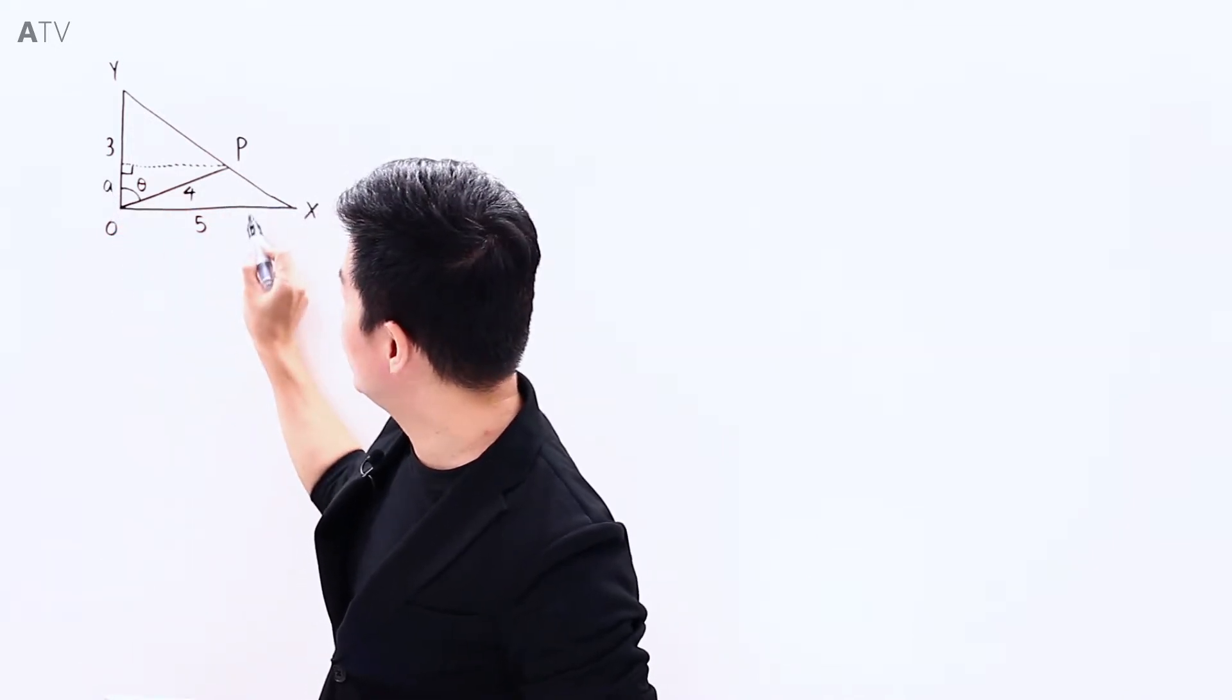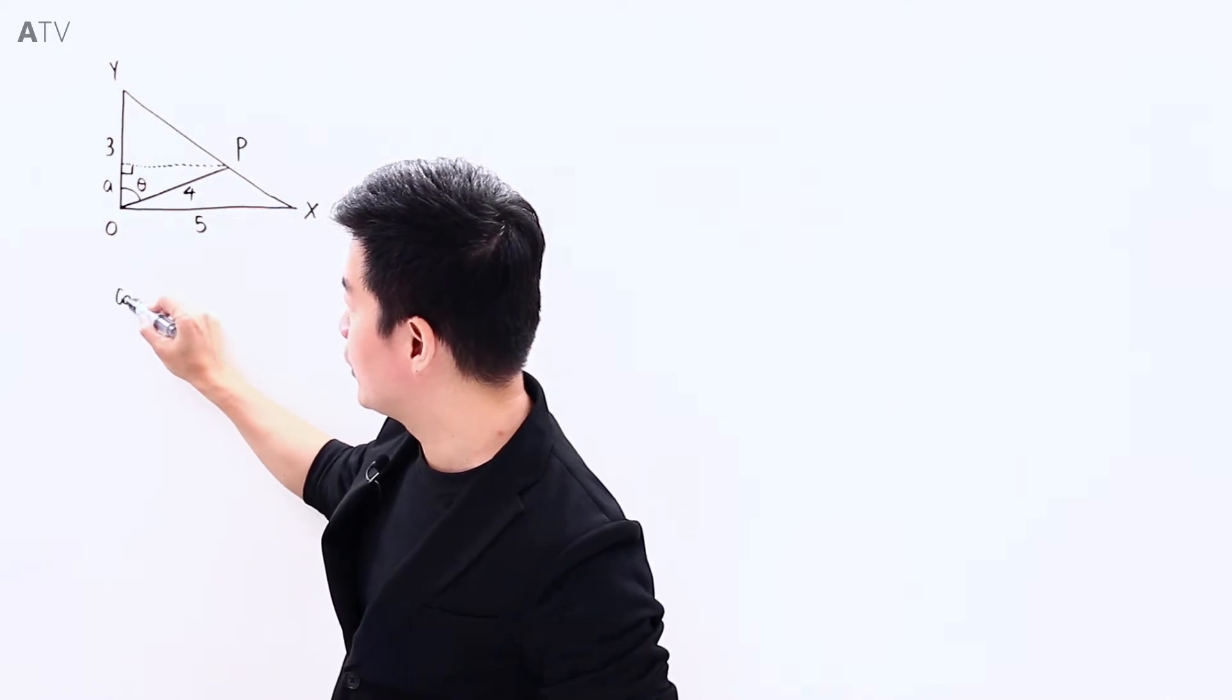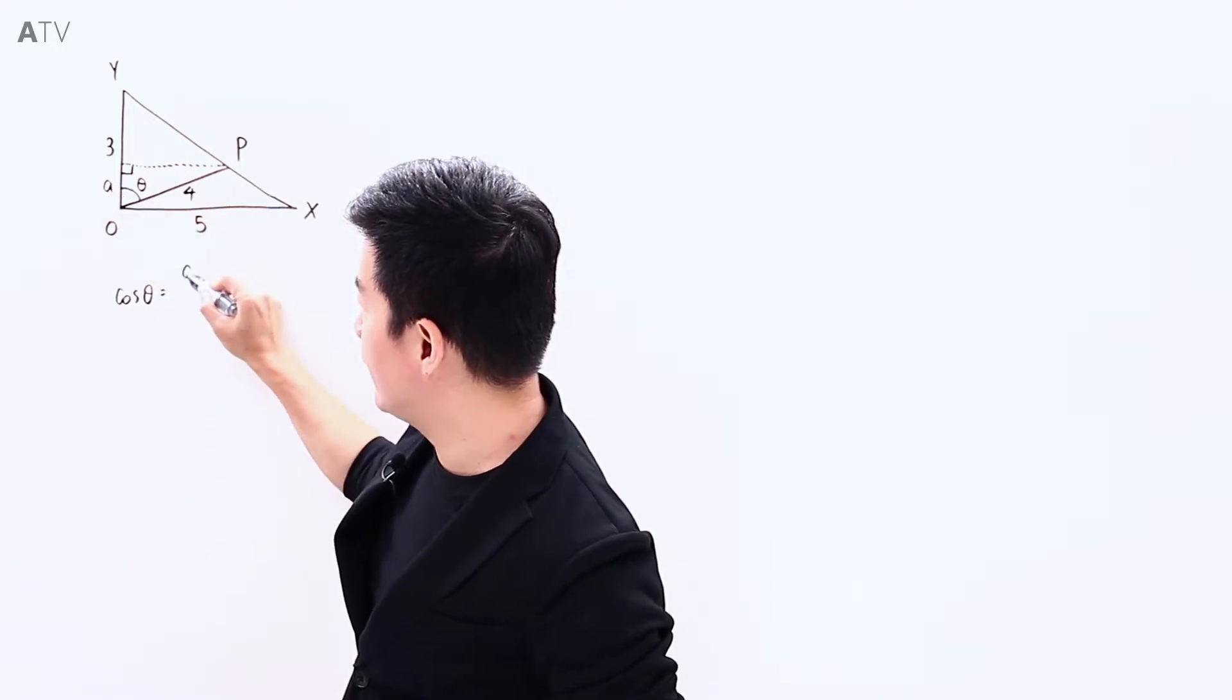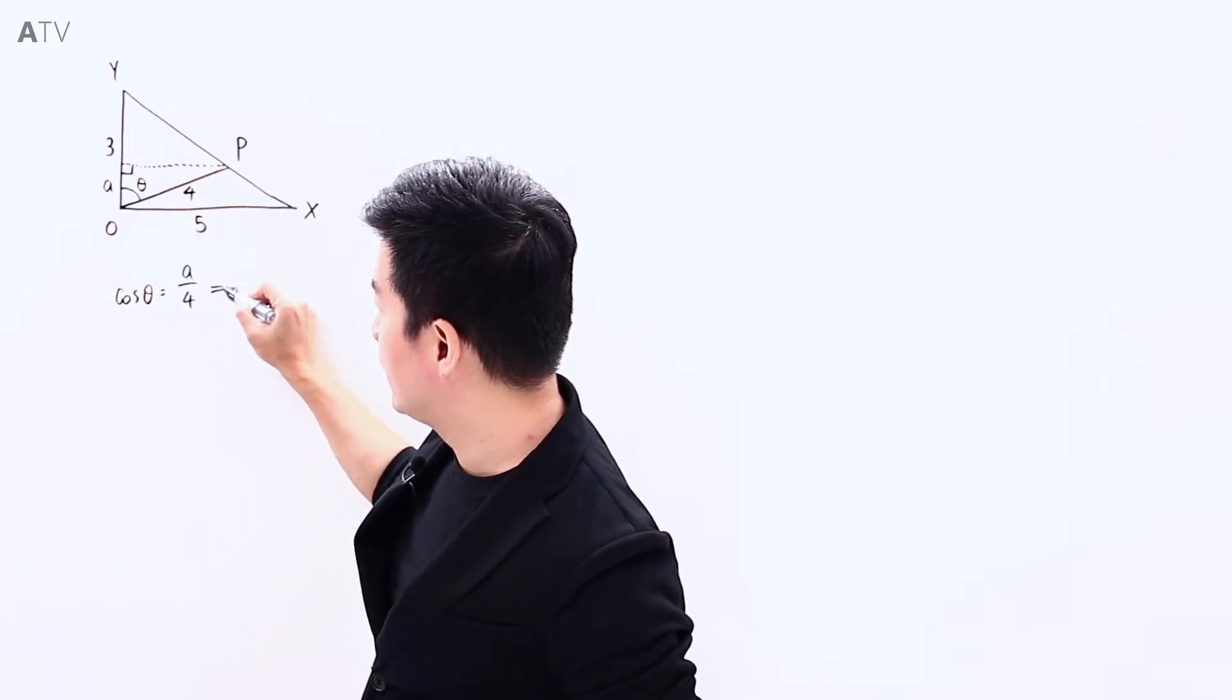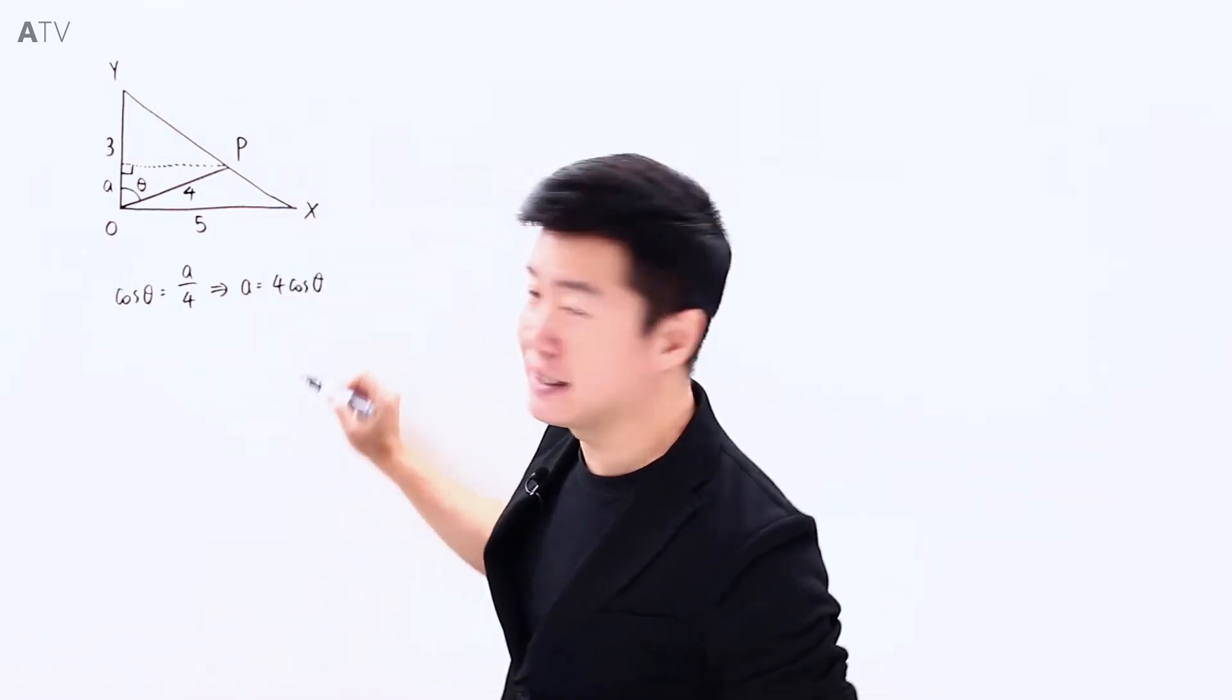that means P to OX, this A, will be making use of cosine theta. Because looking at this right-angled triangle, cosine theta is A over 4. This tells me that A is going to be 4 cosine theta.